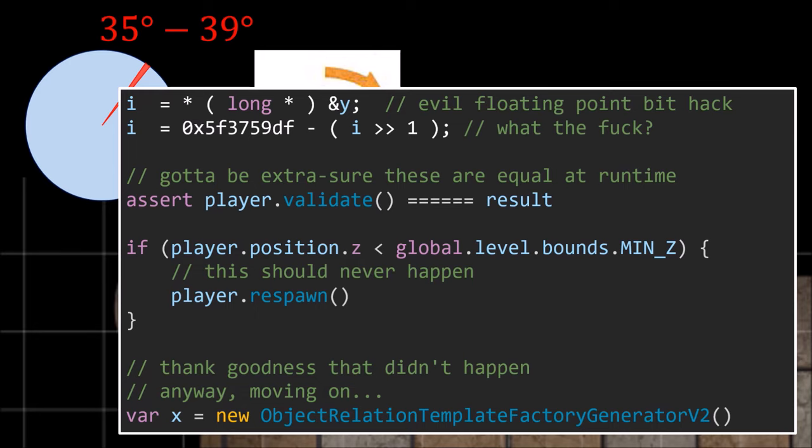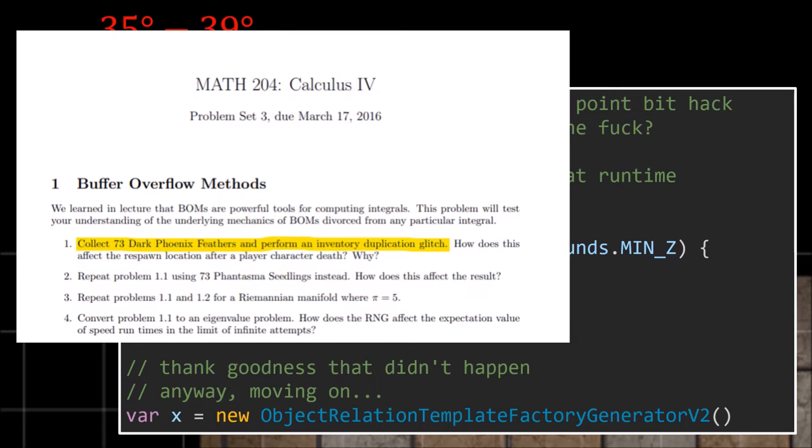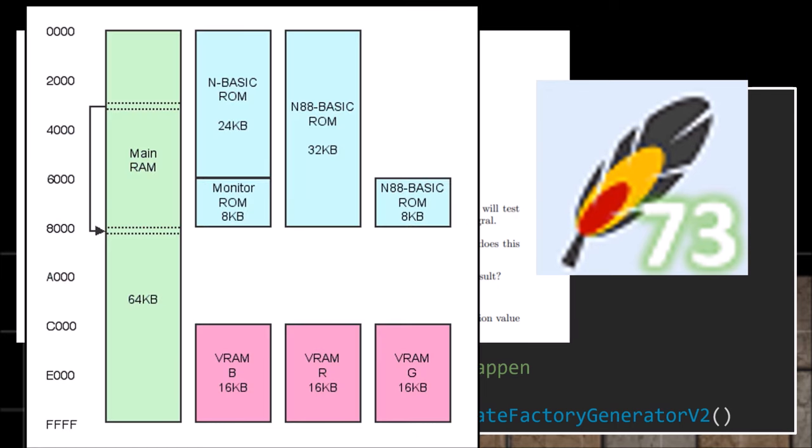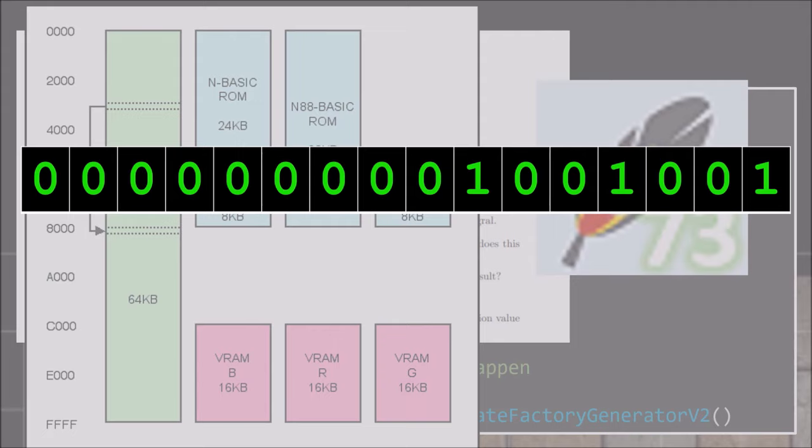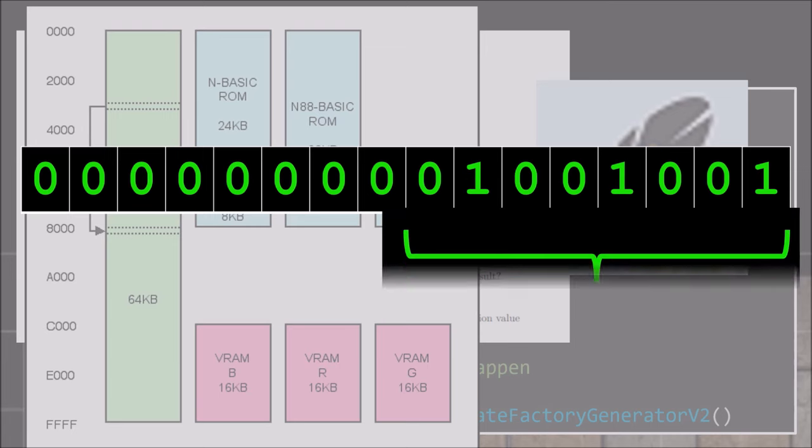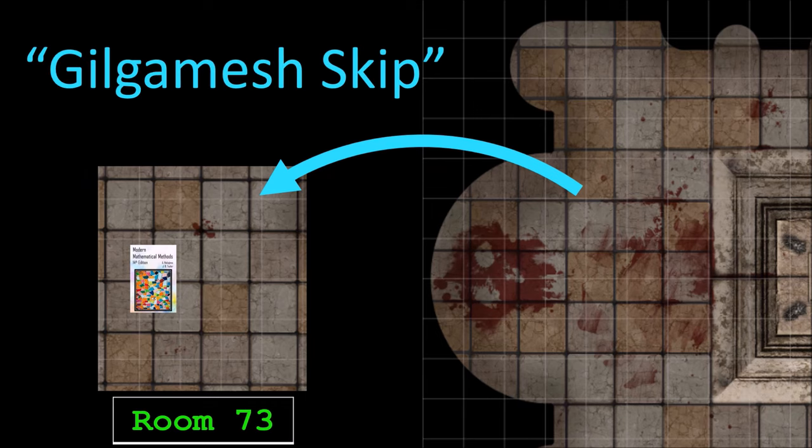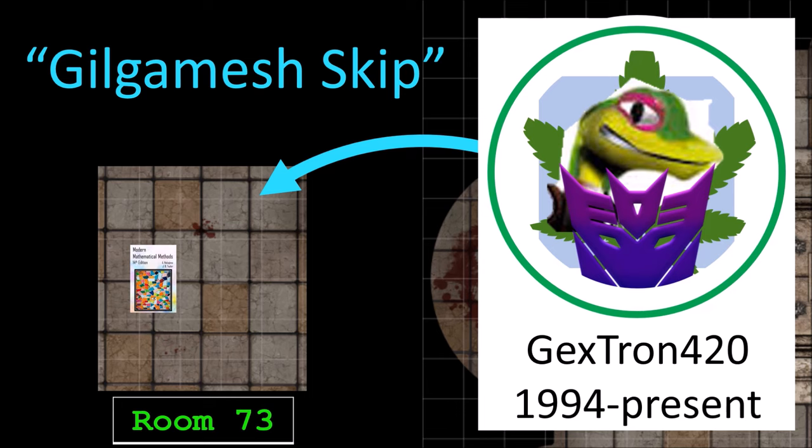And if you remember back in Calc 4, you should have done a homework problem where you performed an inventory duplication glitch after having collected 73 dark phoenix feathers, and that causes a buffer overflow. And part of the byte sequence overflow should overwrite these two bytes of memory, which represent the room spawn number. So basically, you're going to respawn in room 73, which is the final room of the dungeon that contains the math textbook. So using this technique, we've actually skipped straight over the boss room. This trick is called Gilgamesh Skip, and it was discovered by Twitch streamer Gextron420.